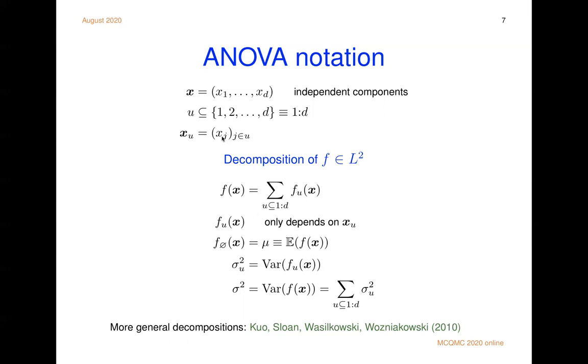Now in this ANOVA decomposition, we start with f in L2. And we write it as a sum of 2 to the d functions, f sub u. Those functions are called effects. If u would be a singleton, then it's a main effect. If u would be a doubleton, it's a two-factor interaction. Higher ones are three and four-factor interactions. And what's salient about this f_u, it only depends on x sub u, not the rest of x. f sub empty set, well it can't depend on any variables. It's got to be a constant function, and we choose it to be the mean that we're trying to estimate.